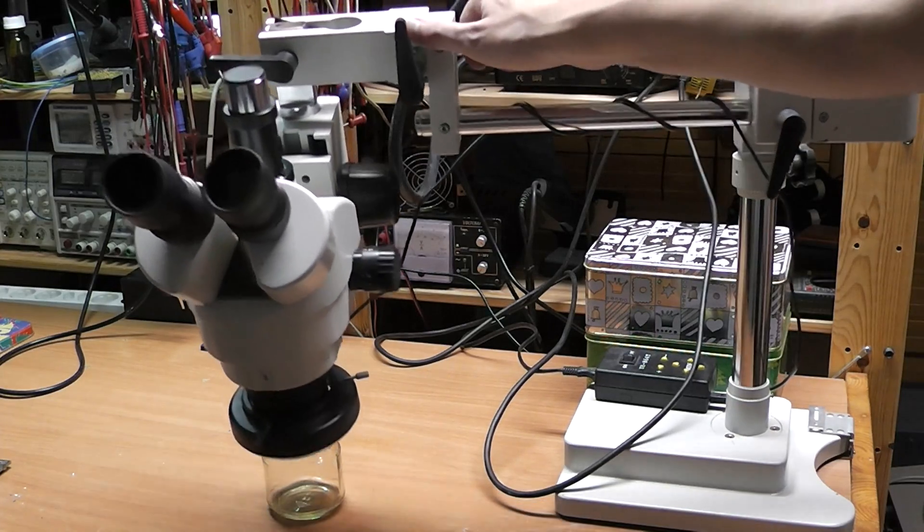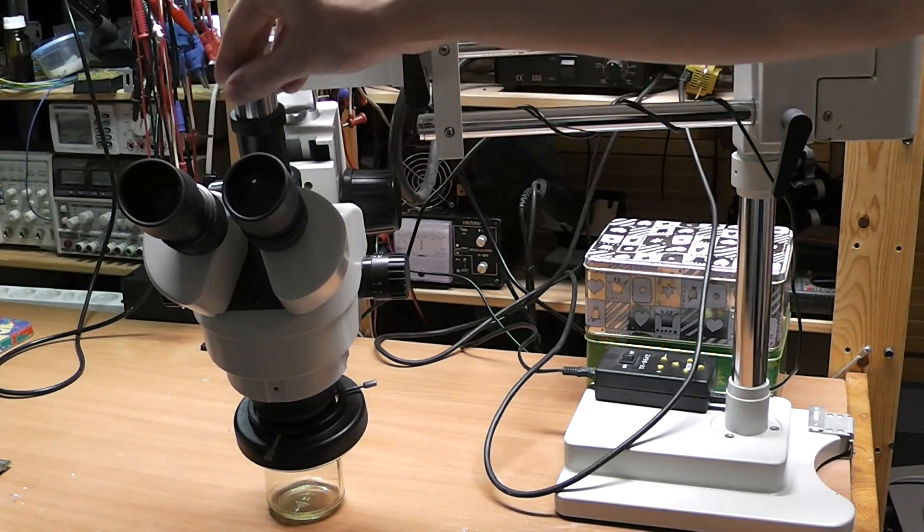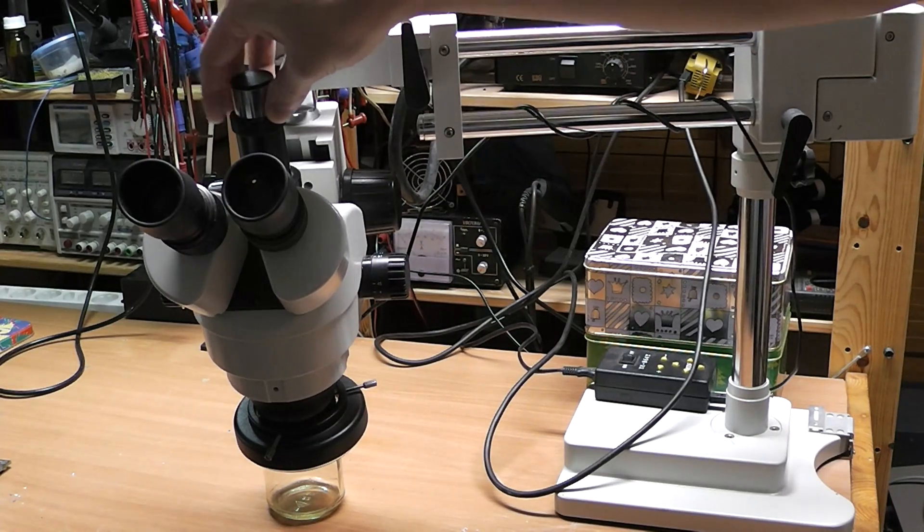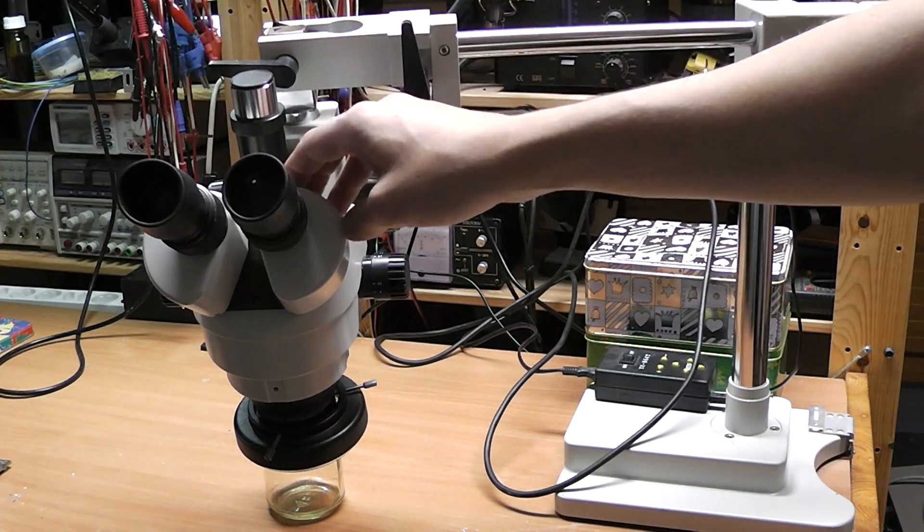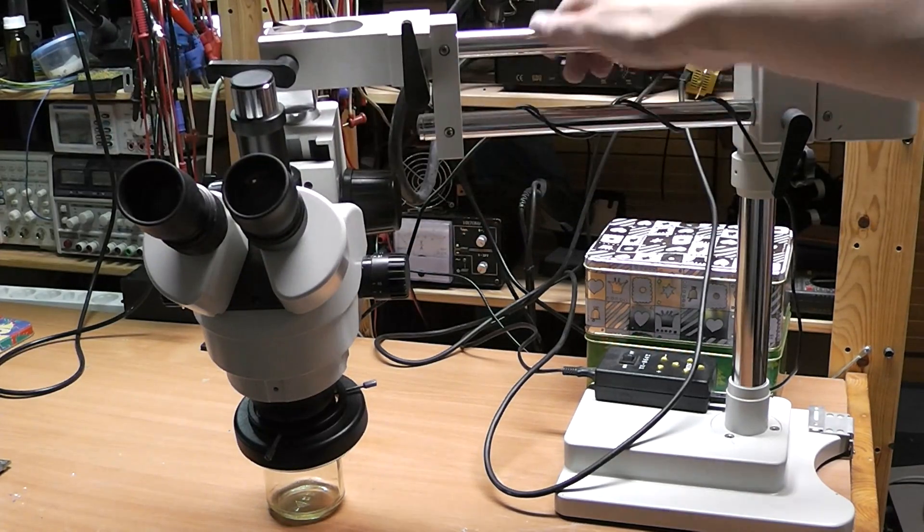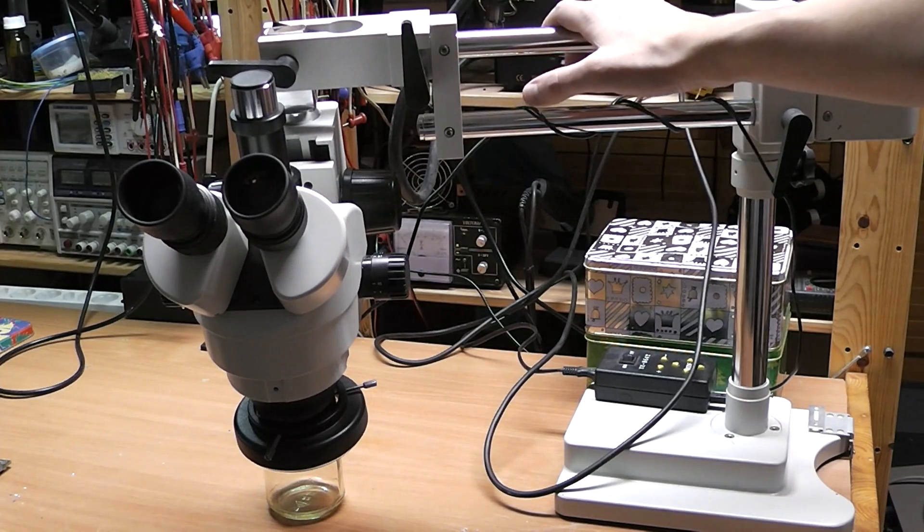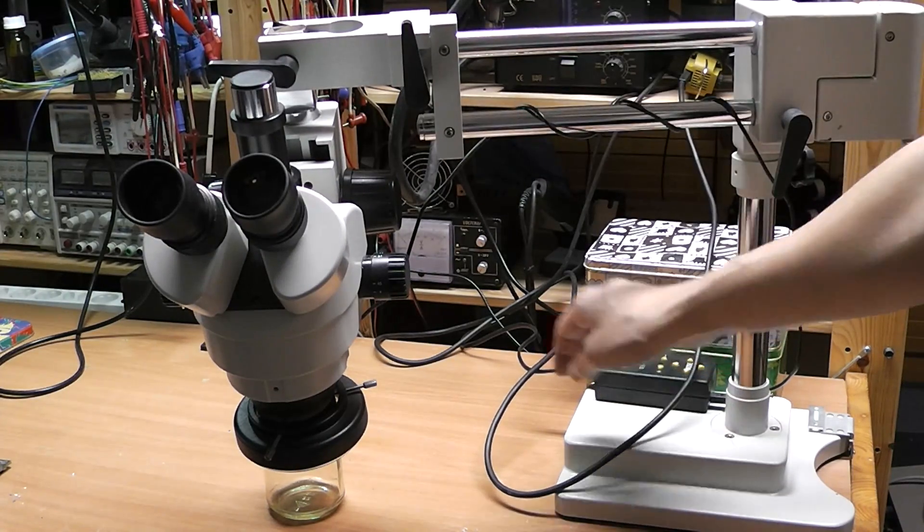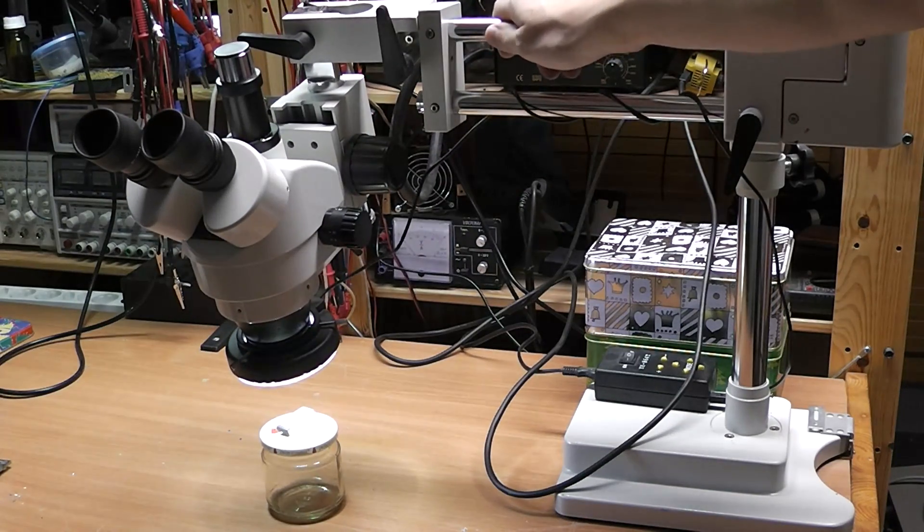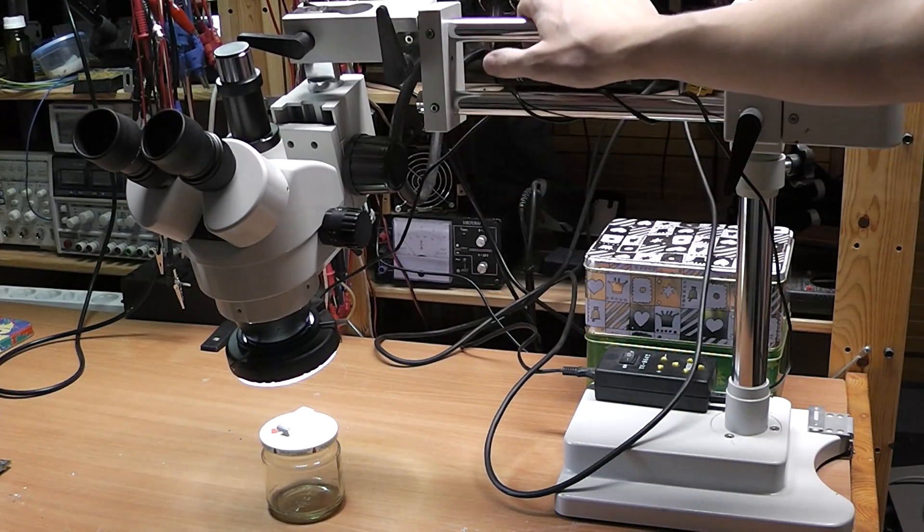Basically this is it. It's a trinocular so it has a mount for my Nikon camera, but the videos I did by filming right through the ocular, so I don't know how they turned out actually. It has an LED light which is very bright and you really need that to get a good image here.